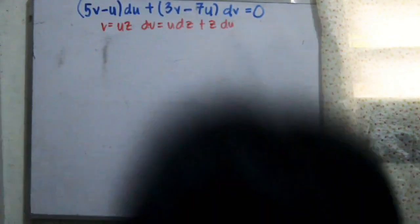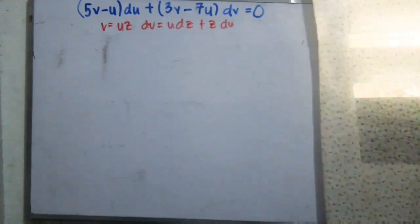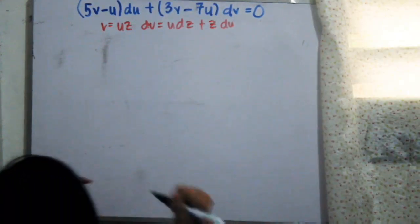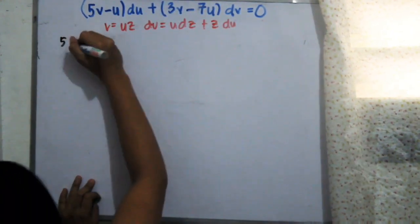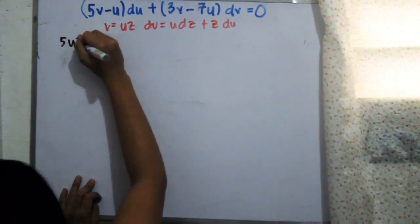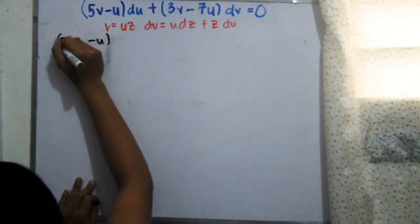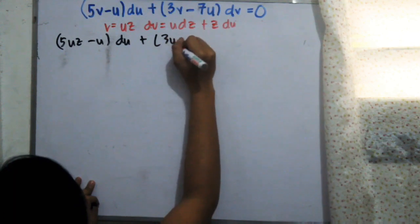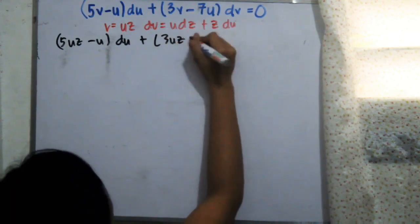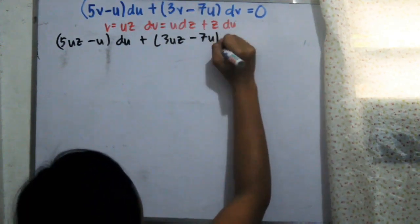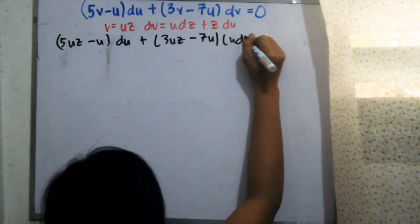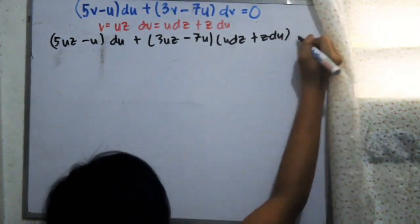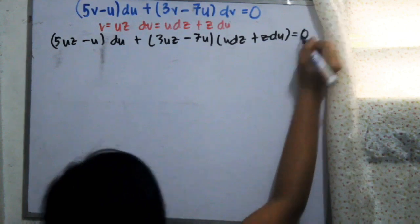Hello everyone, today we will solve another homogeneous differential equation. This is our given. We set v equals uj, so we differentiate v using the product rule and arrive at u dz plus z du.